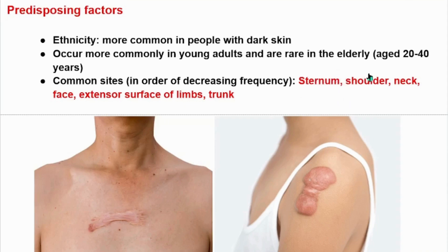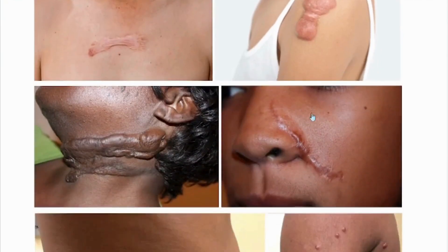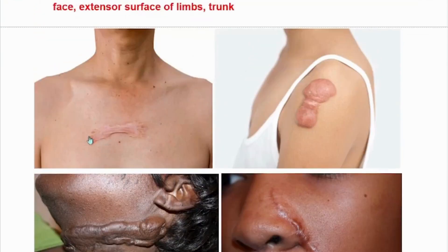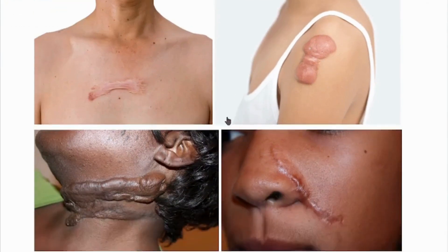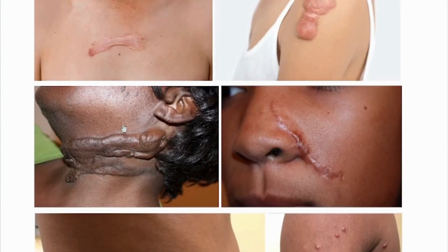Common sites of keloid scar formation in decreasing frequency: the sternum is the most common site, followed by the shoulder, neck, face, extensor surfaces of the limbs, and the ear. Here we can see keloid scars on the sternum of a patient, and also keloid scar formation on the shoulder, neck, face, and extensor surfaces of the body. As we can see, it is common in people with black or dark skin.